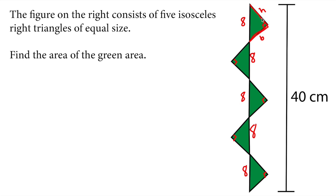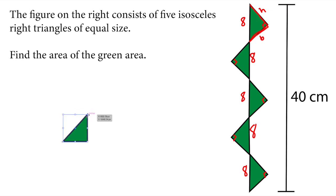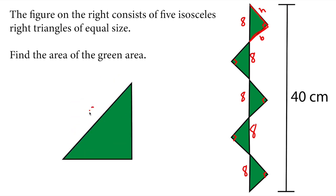I would like to get one of the triangles into the middle and work on it. I will rotate it. So this is the hypotenuse, which is 8. This is the height and this is the base. This angle here is 90 degrees. If I say height equals A, then base will also be equal to A.